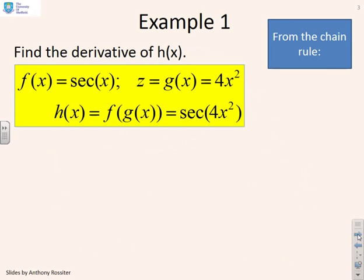Example one. Find the derivative of h of x, obviously using the chain rule, where h is f of g of x, f is defined as sec, and g is defined as 4x squared. So h is actually sec of 4x squared.